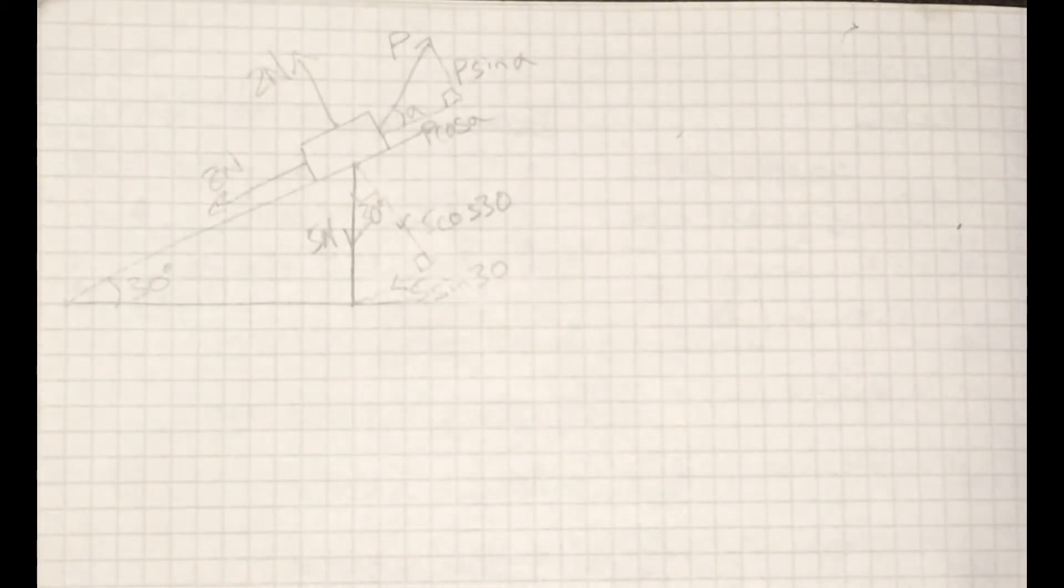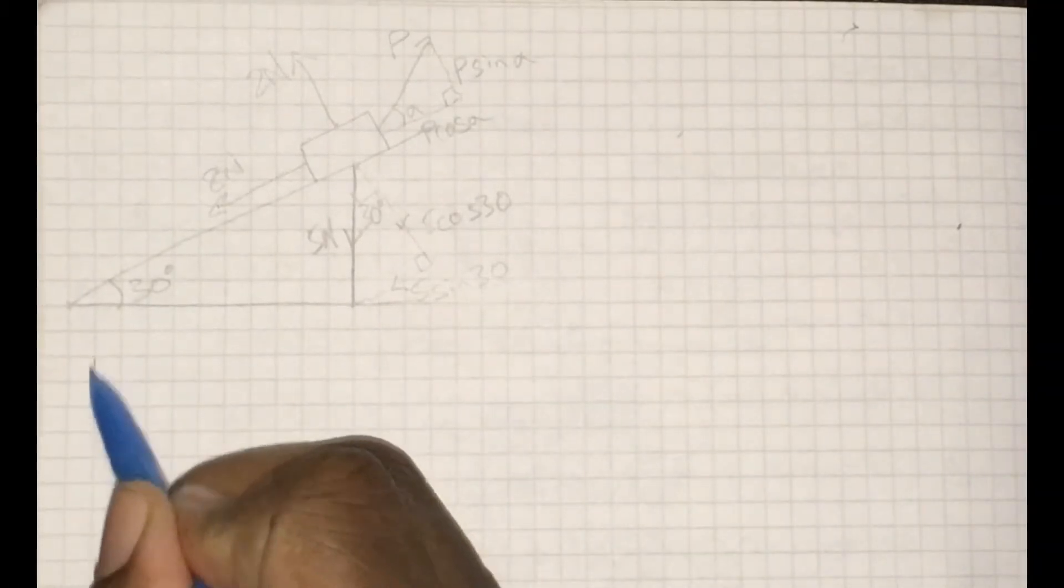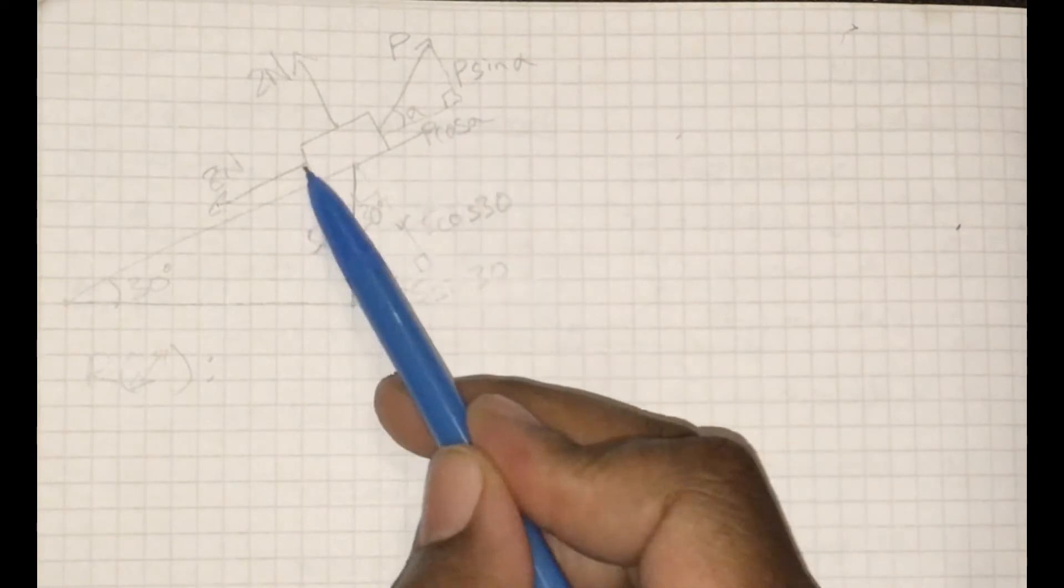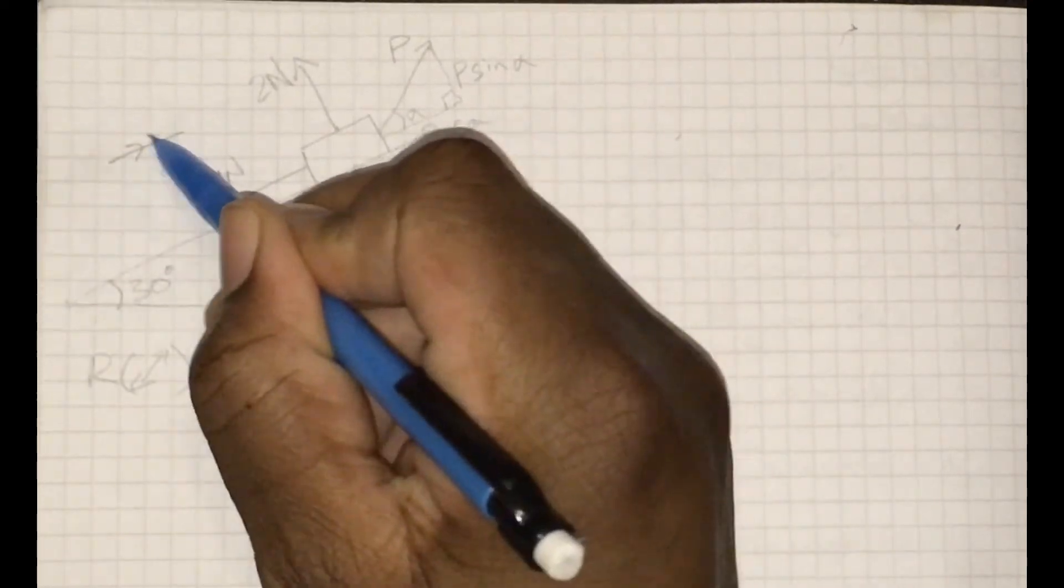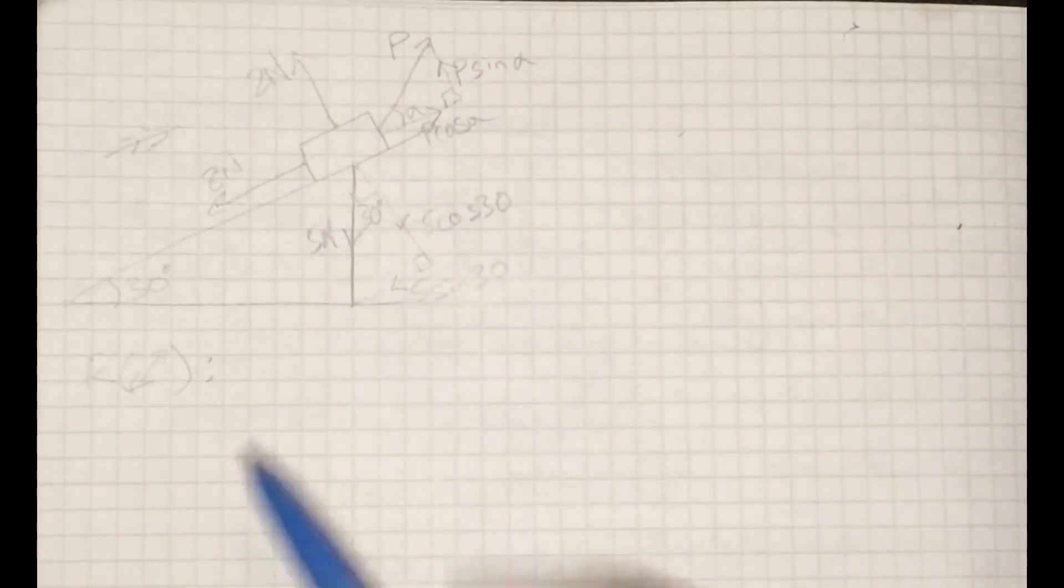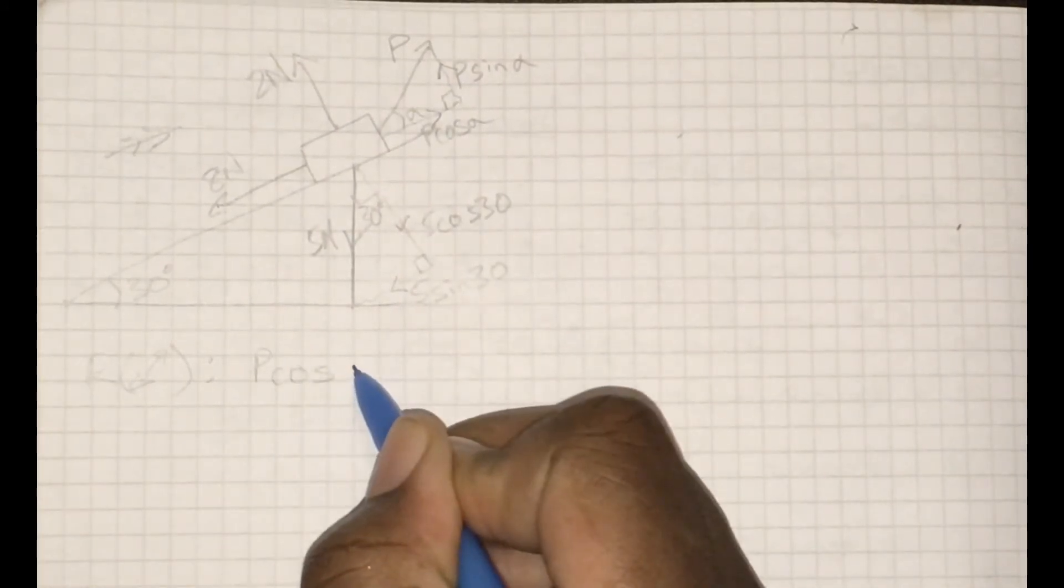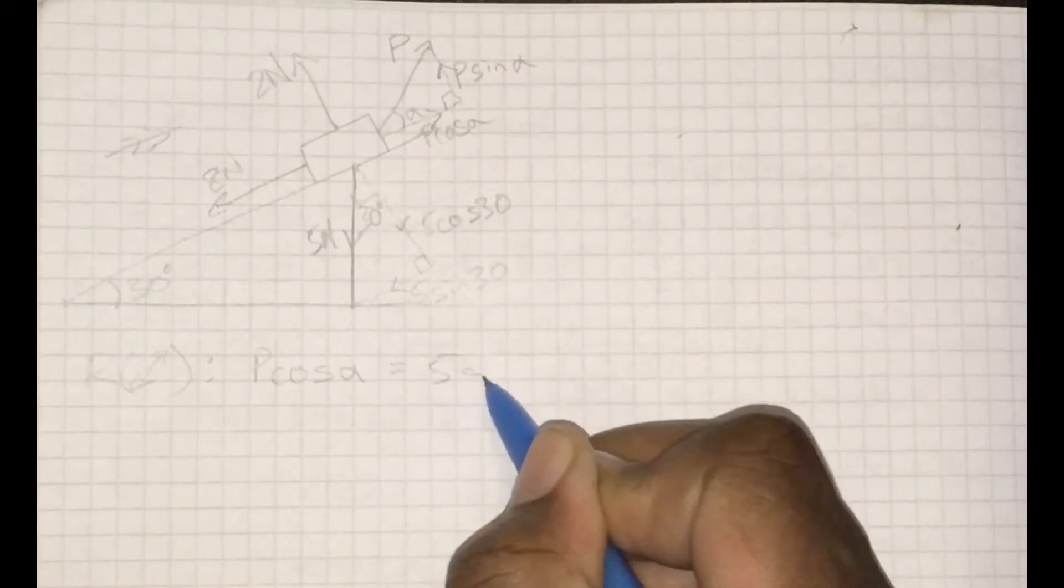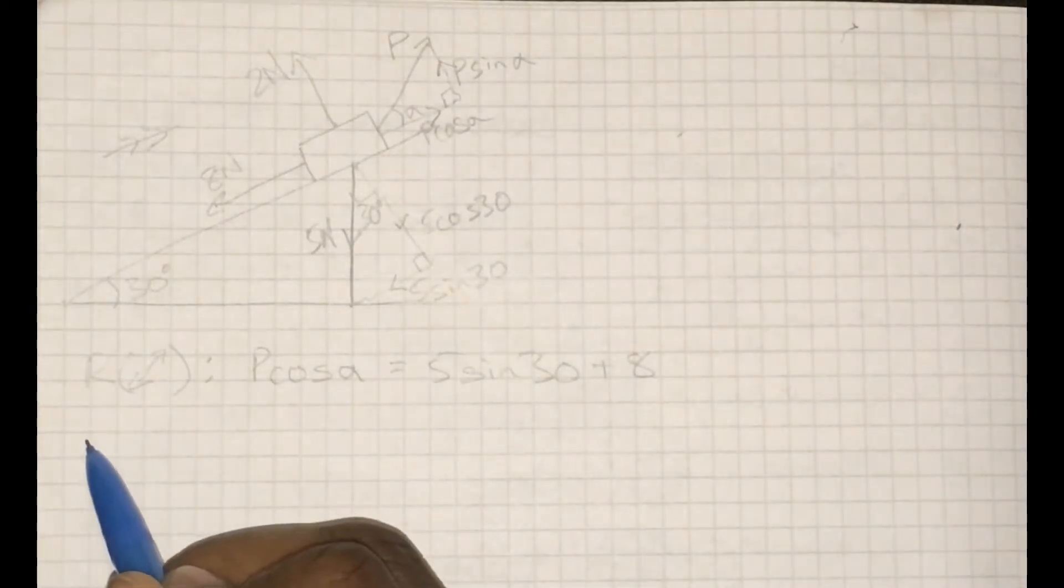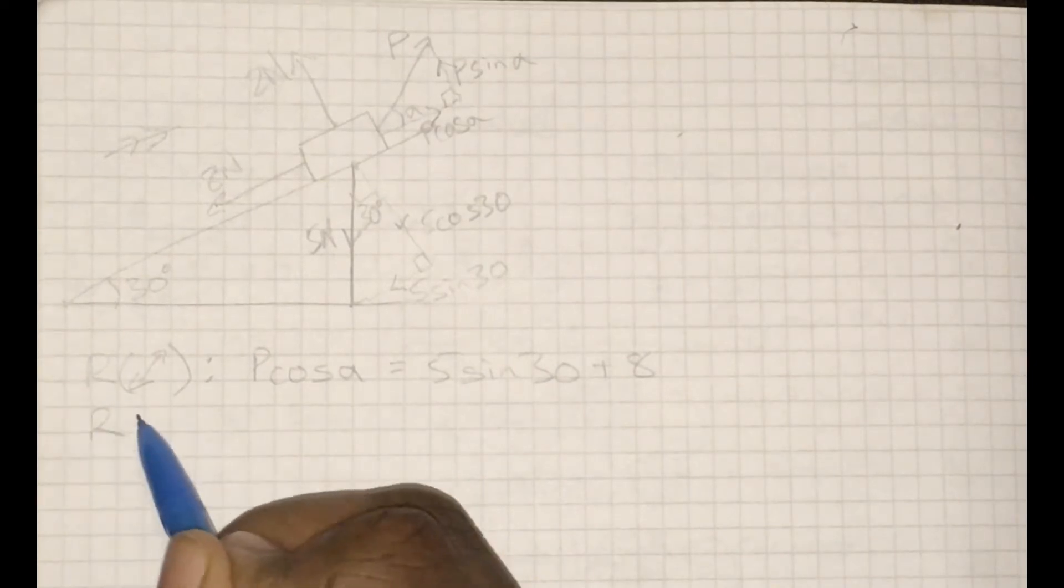So we'll start by resolving parallel to the plane. Let's just make sure we collect all of the forces. The positive direction will be up the slope. Let's just get these directions on. So these are the three forces we need to work with. P cosine alpha in the positive direction equals 5 sine 30 plus 8.